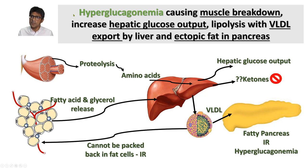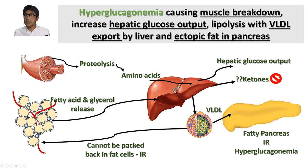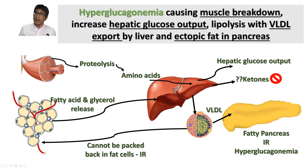High glucagon levels in the setting of insulin resistance are detrimental. The body is losing lean muscle because it breaks down muscle and uses amino acids to increase sugar output. Fat taken from the fat cells cannot be burned — instead the liver recycles the fat out, and fat output in insulin resistance by the liver goes up. This fat cannot be repacked and remains in the circulation. When it remains longer in circulation, it gets into our heart, liver, and pancreas, creating a fatty pancreas which is detrimental to our health.